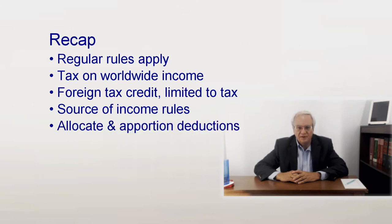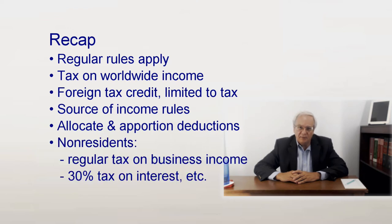Source rules apply to determine what income is foreign and what is from US sources. Deductions must be allocated and apportioned to determine the net taxable income from each source, and the deduction and source rules apply for both inbound and outbound transactions. Non-residents pay US tax at regular rates on taxable income from a trade or business and on wages.